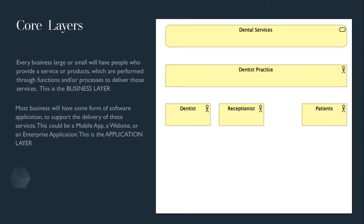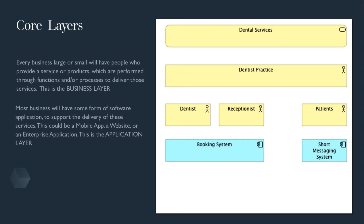Most businesses will have some form of software application to support the delivery of these services. This could be a mobile app, website or an enterprise application. This is the application layer. Using our example, we have a booking system to manage appointments and an SMS app to notify patients of their appointments.